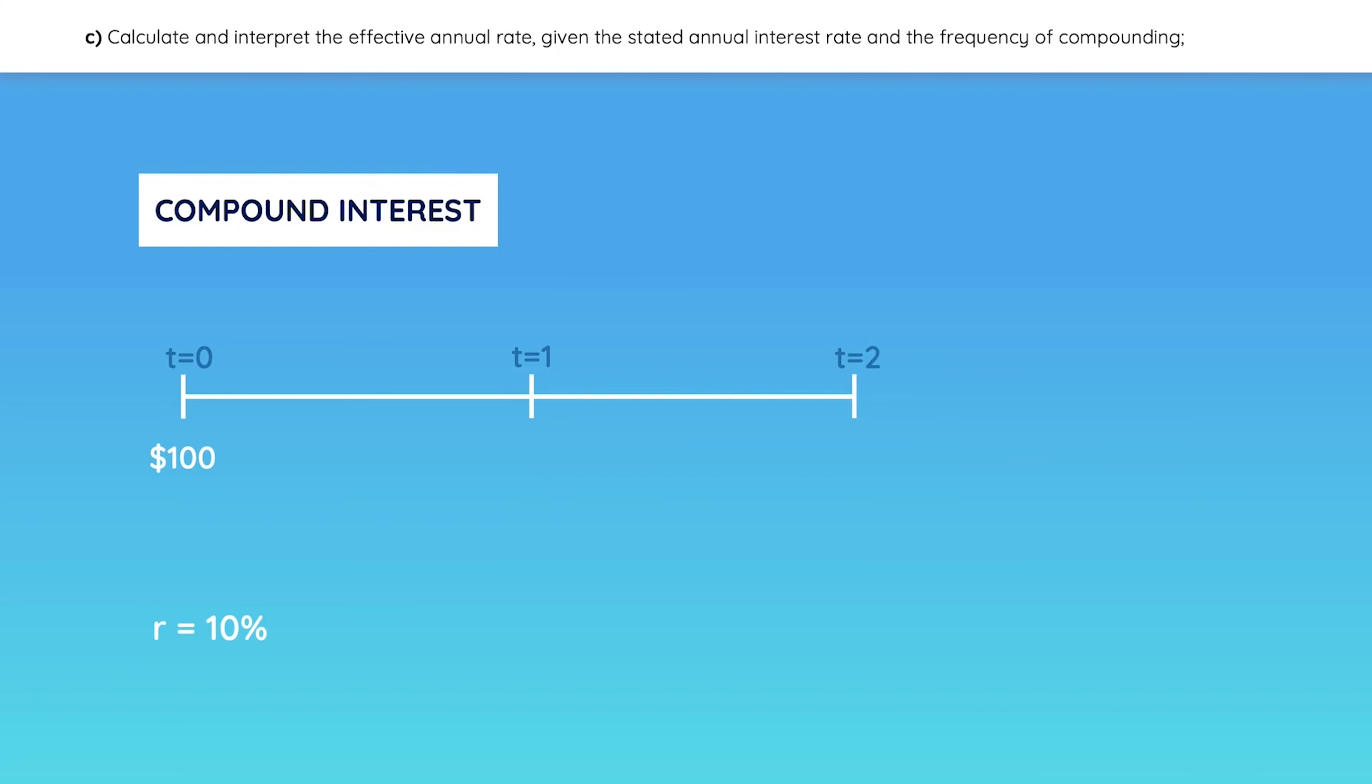Now let's look at how compounding works. You can visualize it here. You earn 10% the first year, so you end up with $110 at the end of the year. And then you earn 10% on that entire amount on the second year. That's what it means to compound, earning interest on previous interests.